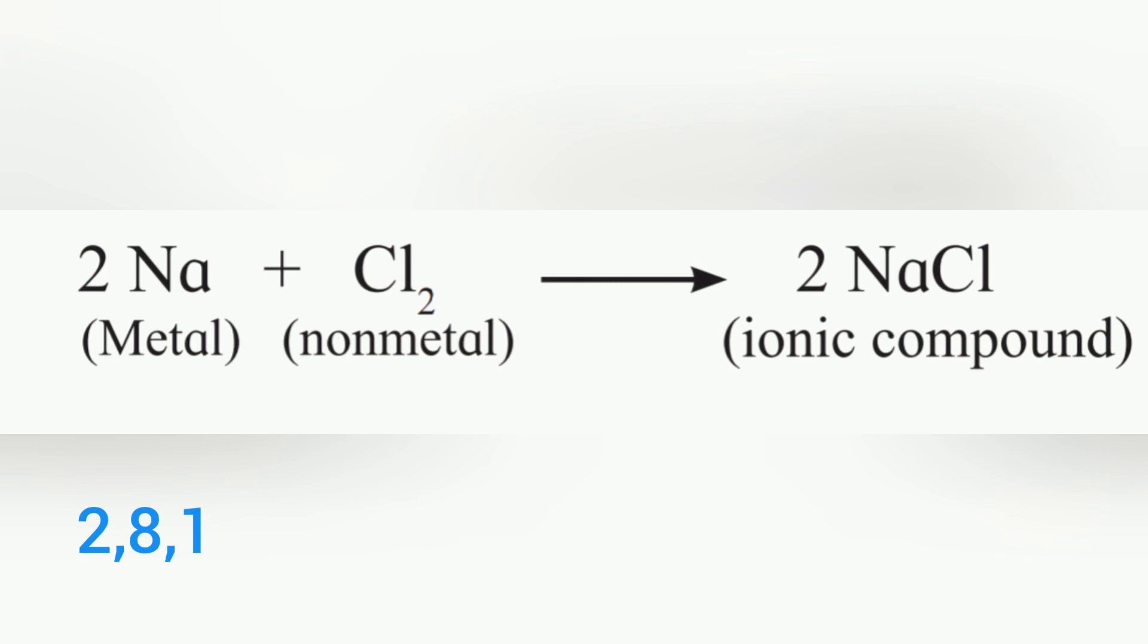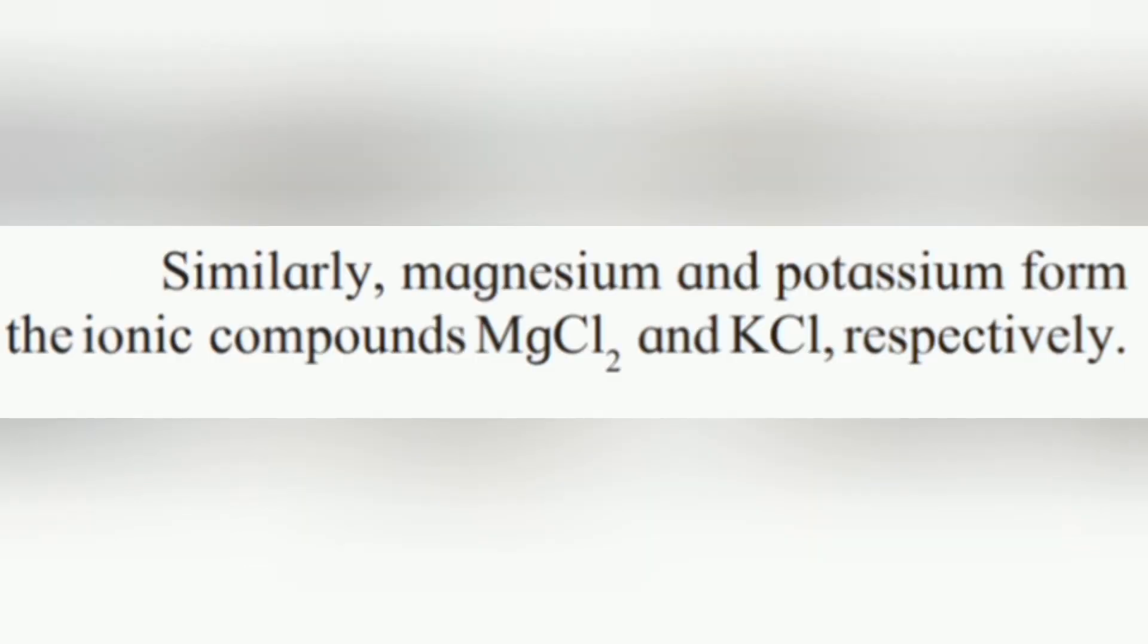The chemical equation is: 2Na (metal) + Cl₂ (non-metal) → 2NaCl (ionic compound). Similarly, magnesium and potassium form the ionic compounds MgCl₂ and KCl respectively.